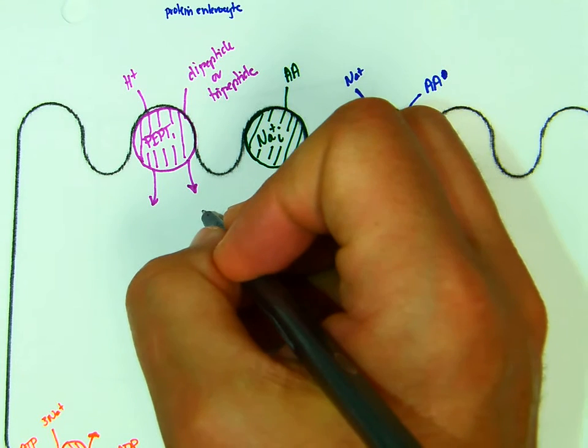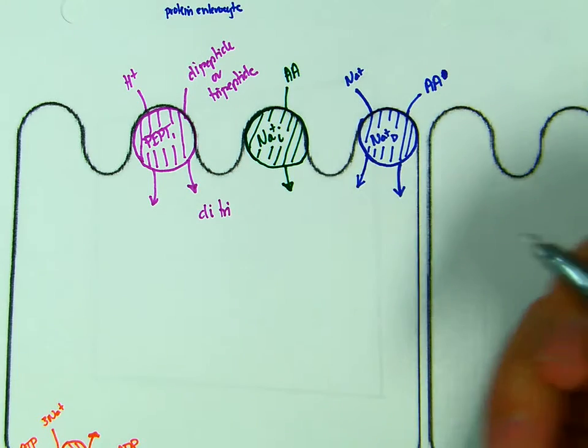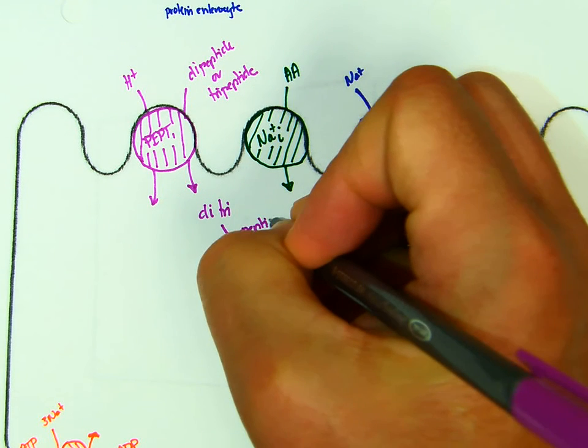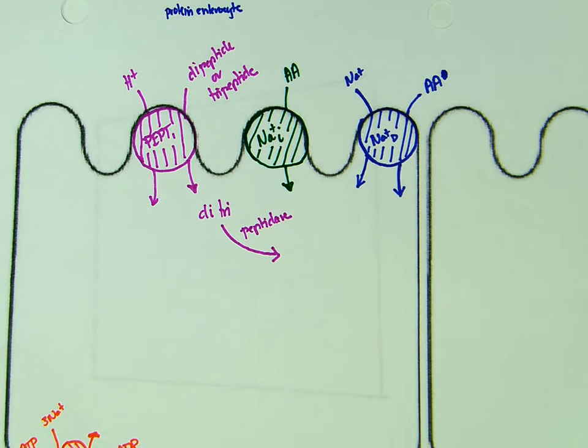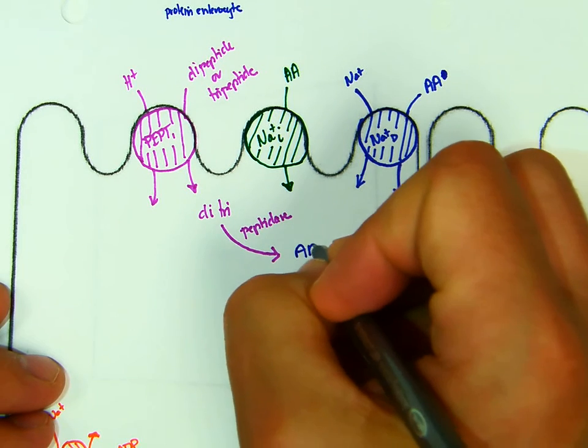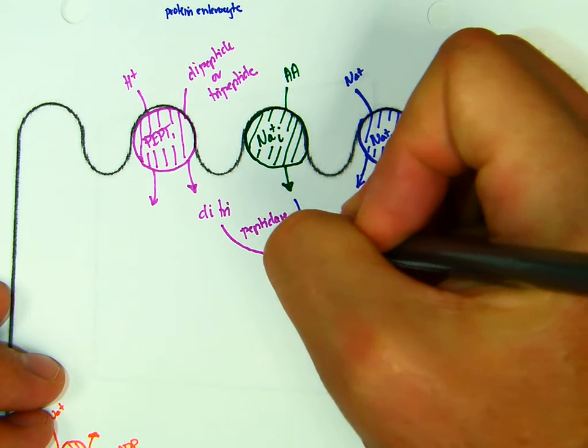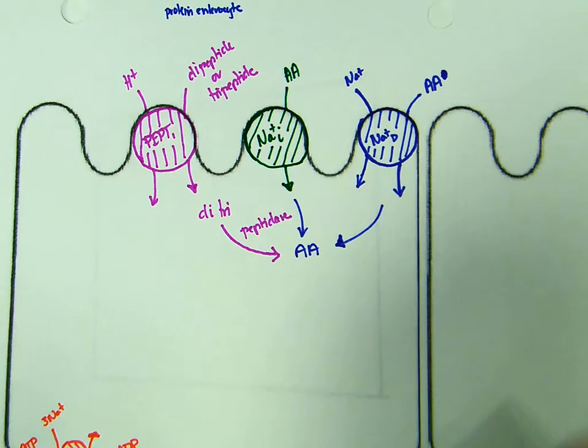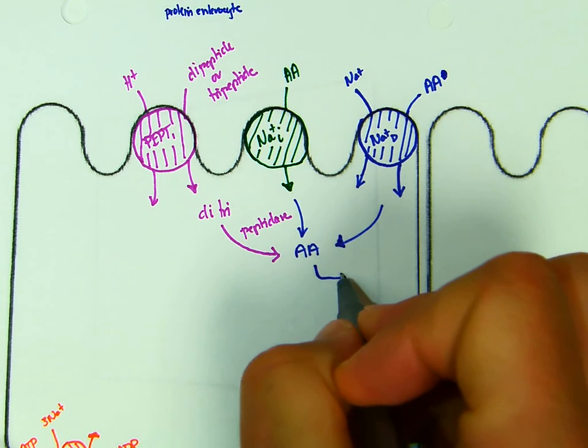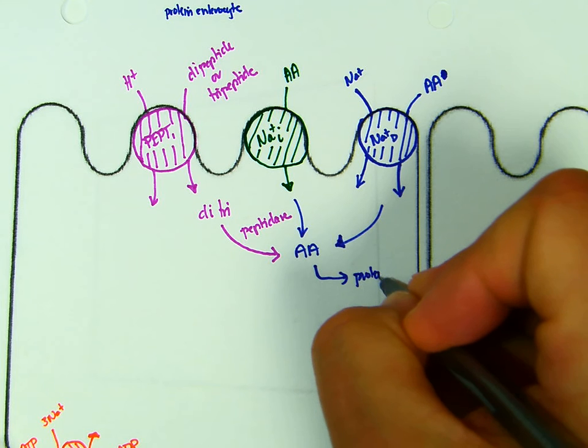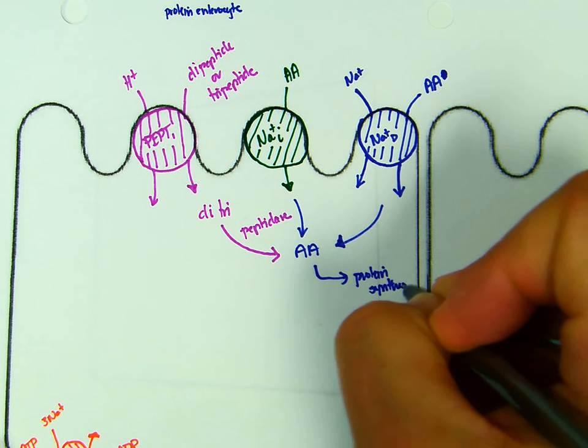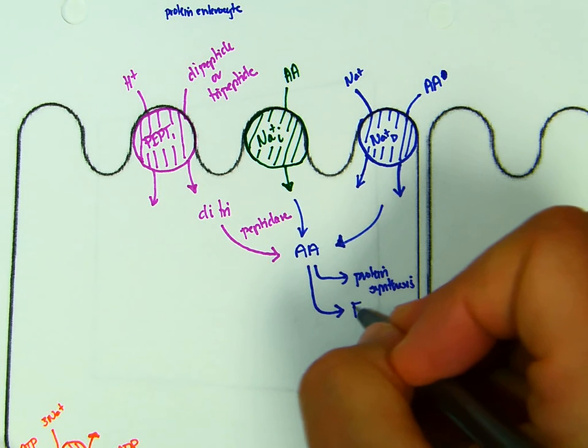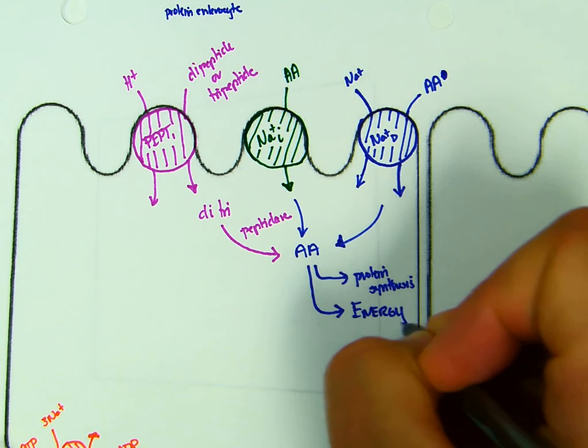And this di- and tri-peptide through the activity of peptidase produces amino acid. And so we have amino acids coming from there, from the sodium-independent, and from the sodium-dependent. We can use amino acids for protein synthesis, enzymes, transporters, and the like. We can also use it for energy to support the functions of the enterocyte.